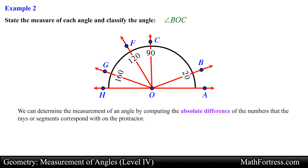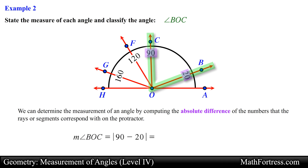We can determine the measurement of an angle by computing the absolute difference of the numbers that the rays or segments correspond with on the protractor. Angle BOC is formed by ray OC, which is assigned an angle measure of 90 degrees, and ray OB, which is assigned an angle measure of 20 degrees. Computing the absolute difference of these two values, we obtain 70 degrees for the measurement of angle BOC.